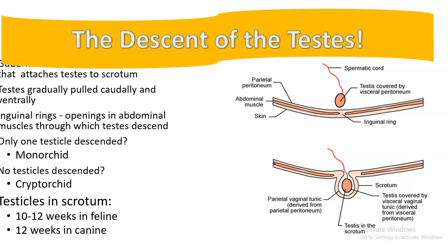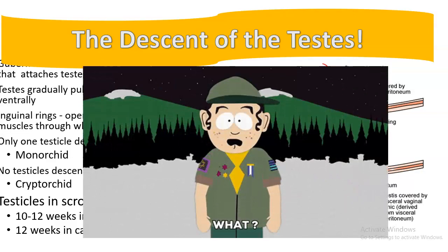The descent of the testes: some documents refer to the gubernaculum as essentially a 'boy scout leader' — the gubernaculum attaches to the testes and the scrotum and leads the way out of the body.